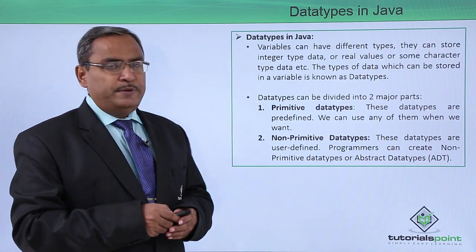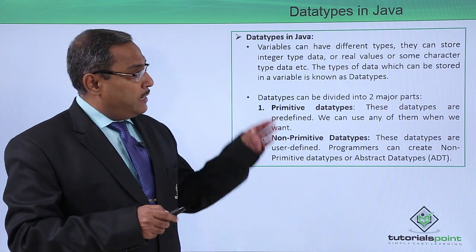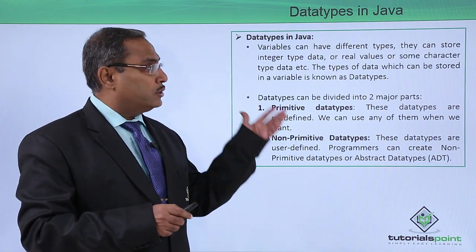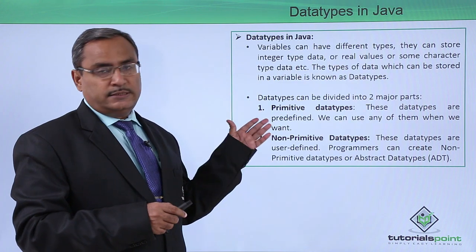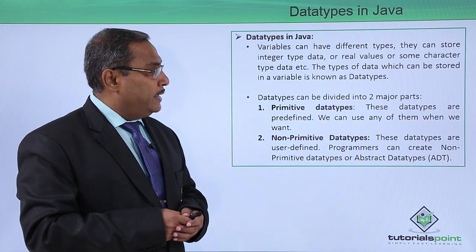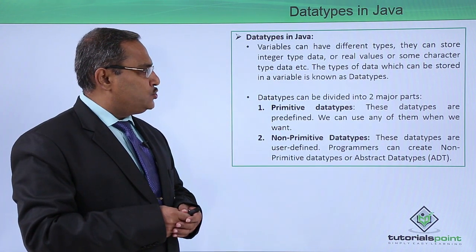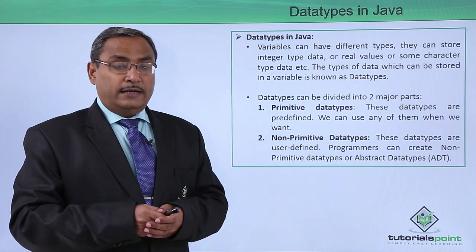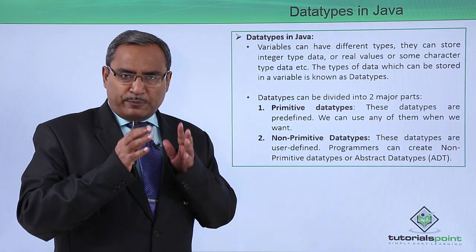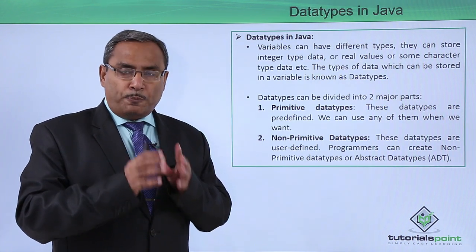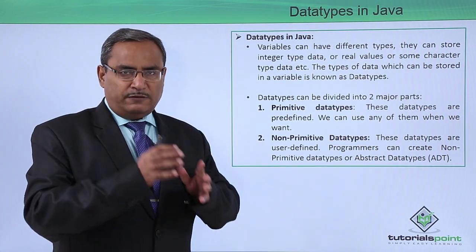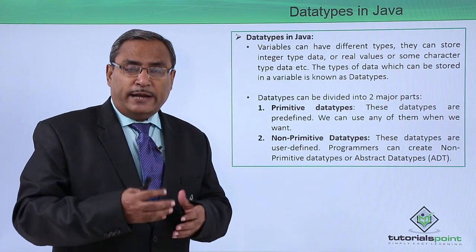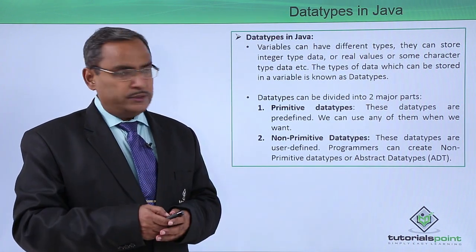Variables can have different types or data types, and they can store integer type of data, real values, or some character type of data, etc. The types of data which can be stored in a variable is known as the data type. Depending upon the data type, how much memory space will be occupied against the variable and what kind of value the variable can hold will also be decided.